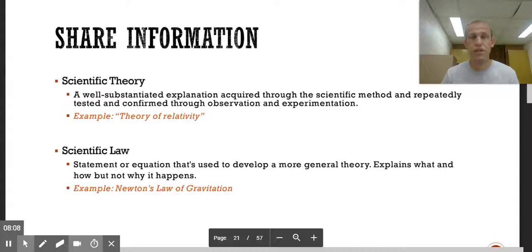When we share information, we talk about scientific theories and scientific laws. A scientific theory is a well-established explanation acquired through the scientific method and repeatedly tested and confirmed through observation and experimentation. An example would be the theory of relativity, which states that larger objects distort spacetime or fast objects distort spacetime. Scientific law, on the other hand, is a statement or equation that's used to develop a more general theory. It explains what and how, but not why something happens. Newton's law of gravitation actually sort of explains the theory of relativity, even though it came before it. Using the scientific law should mimic the scientific theory.